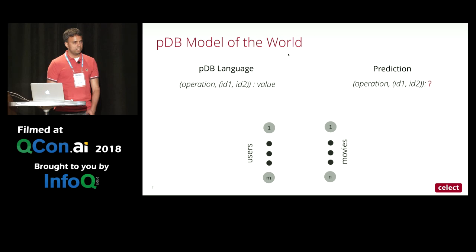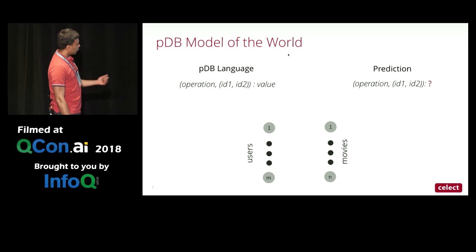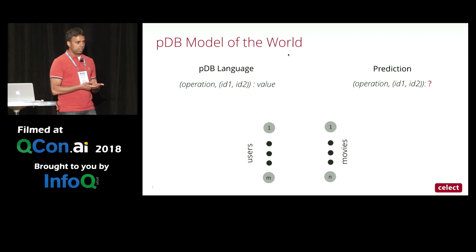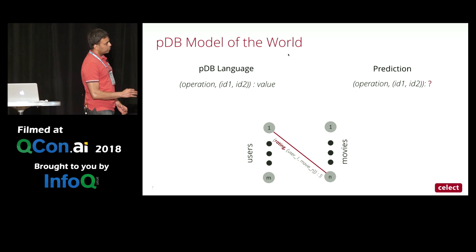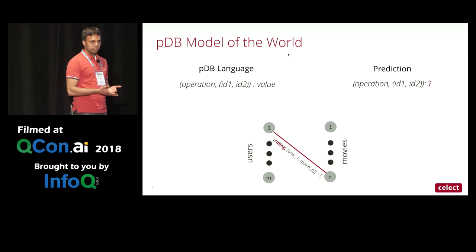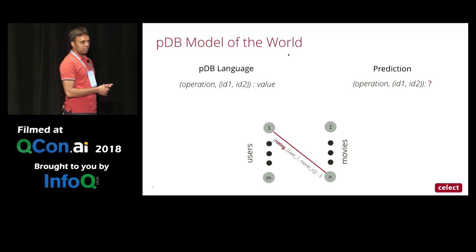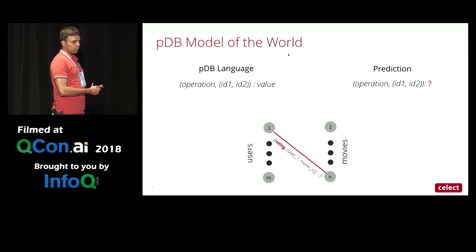In this simple case there are two kinds of entities: users, numbered one to M, and movies, numbered one to N. You can think of these as vertices in a graph, and every data point in the dataset is an edge. For example, for a rating data point, the operation is 'rating,' ID1 identifies a particular user, ID2 identifies a particular movie, and the value — say, five — is the rating user one gave movie M.